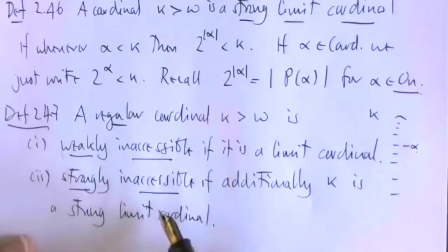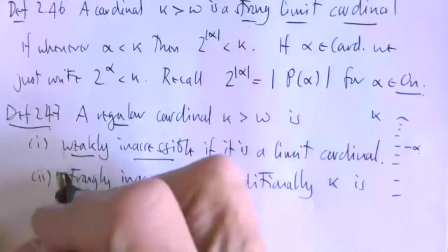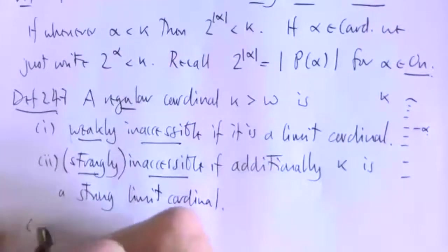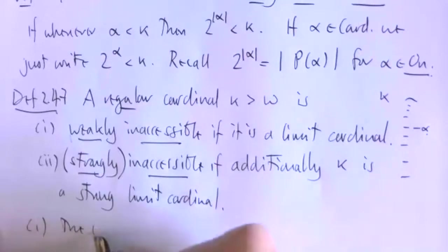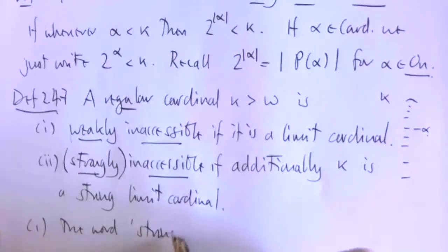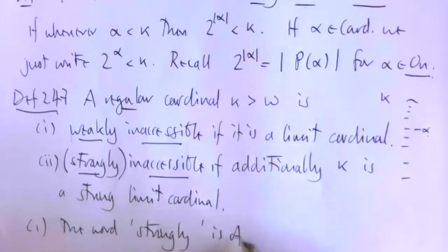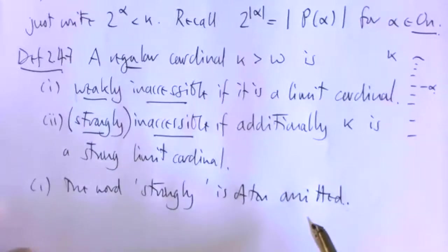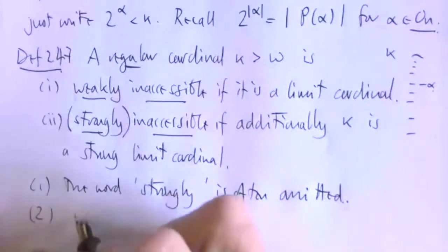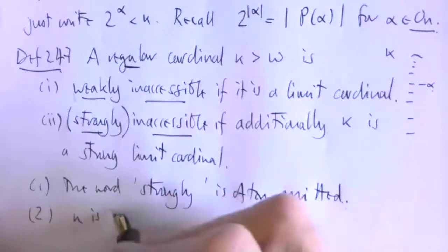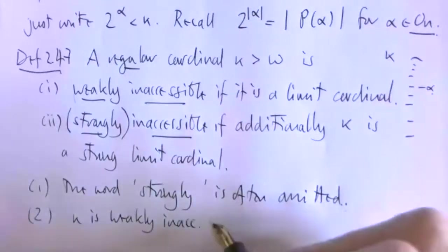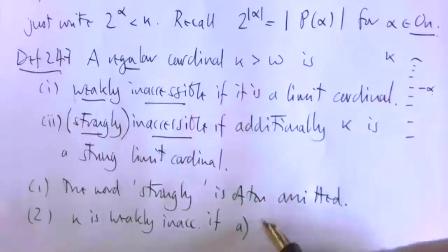So strongly inaccessible is a stronger closure property on kappa than weakly inaccessible. For weakly inaccessible we only say we can't access it using the successor cardinal operation; for strongly inaccessible we also can't access it using the power set operation. We often drop the word 'strongly,' so if I use the word inaccessible by itself, I usually mean strongly inaccessible.